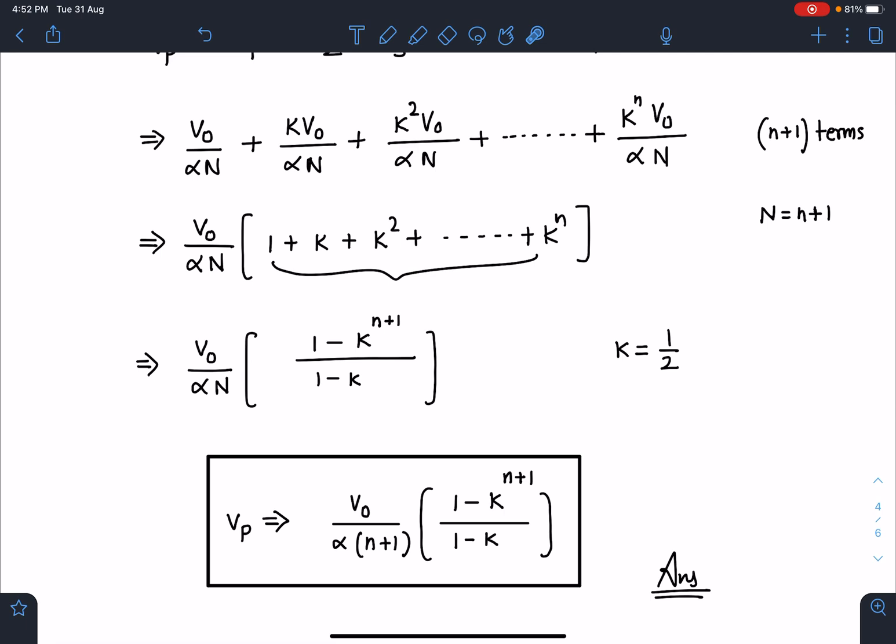This potential at point P due to all the slices I can write as V₀ by α(n+1) and sum of n terms of GP I can write: (1 - k to the power n+1) divided by (1 - k), because k is less than 1 so I am writing in this manner.